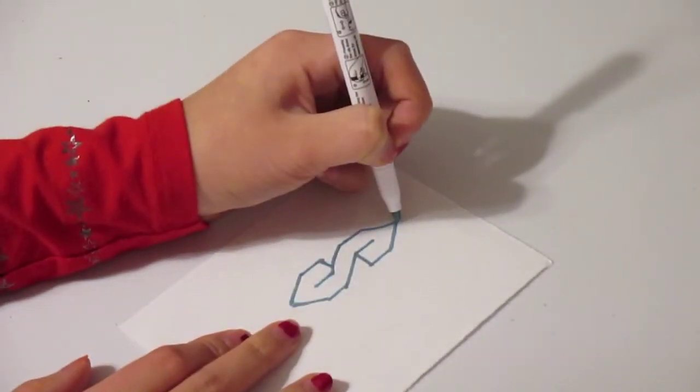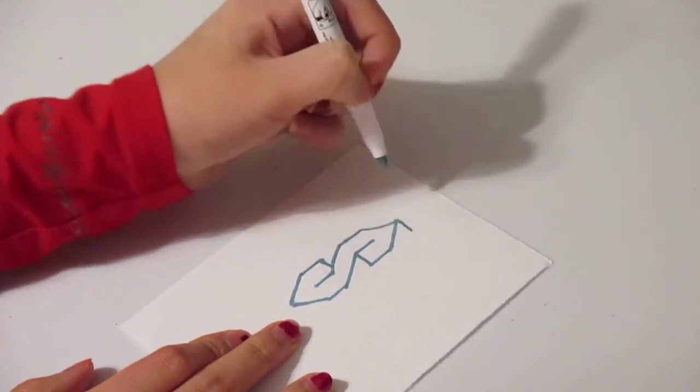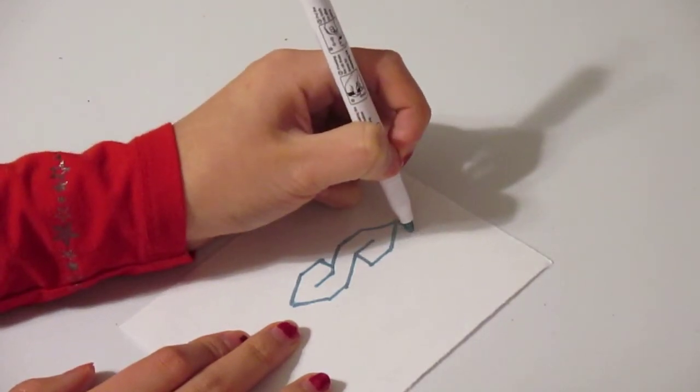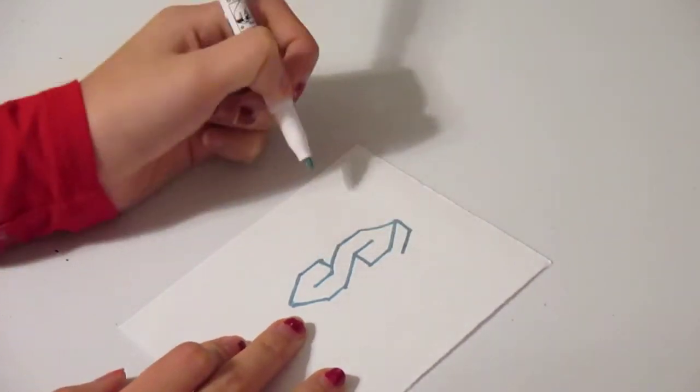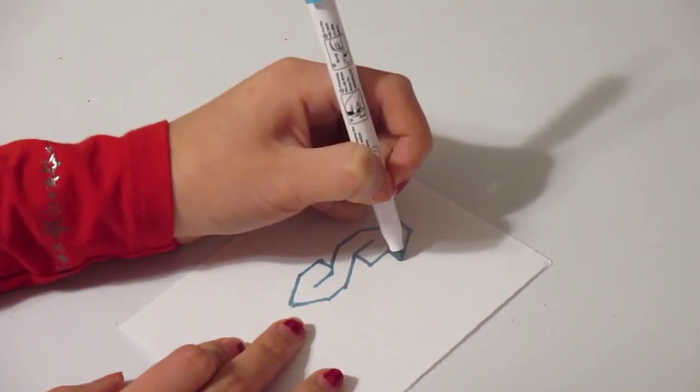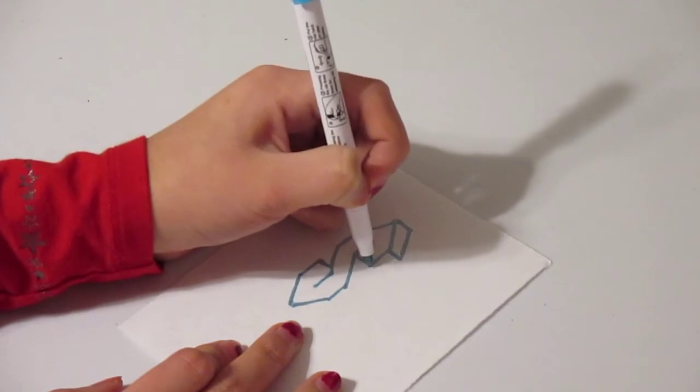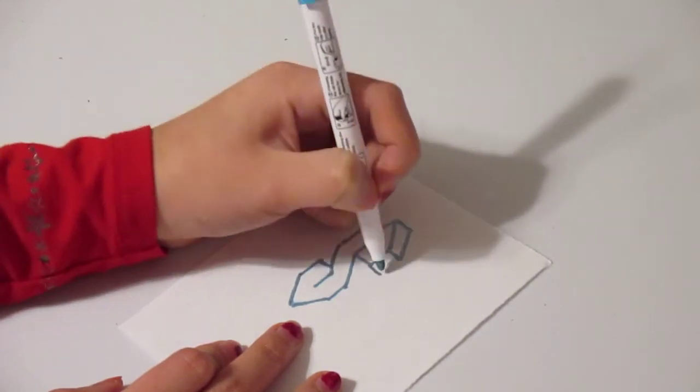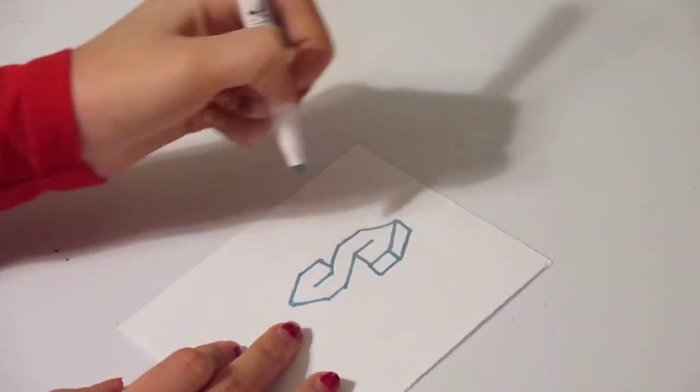Now we want to make a line that goes out here and we're going to make an angle there. Now draw another line that goes out there and another line that goes out here and then make another line.